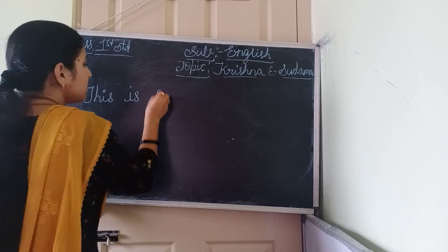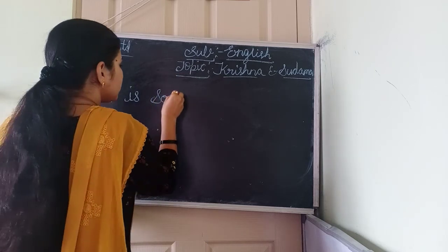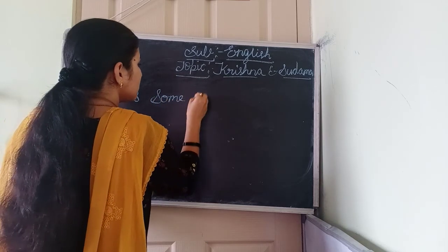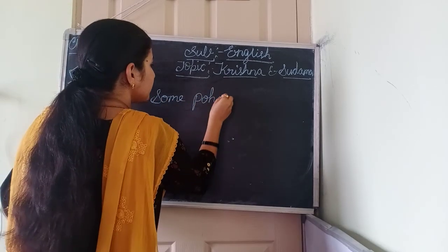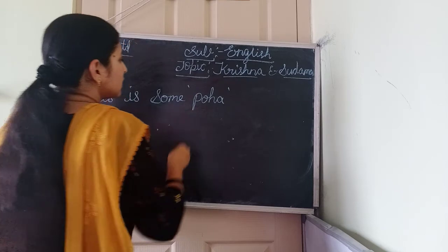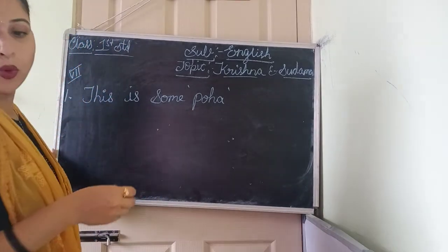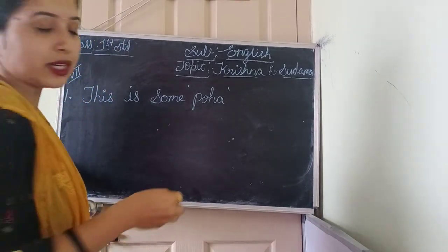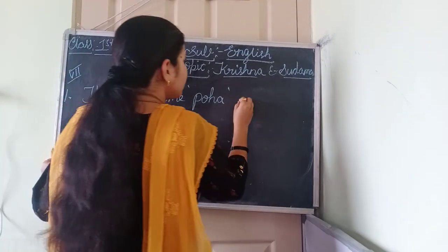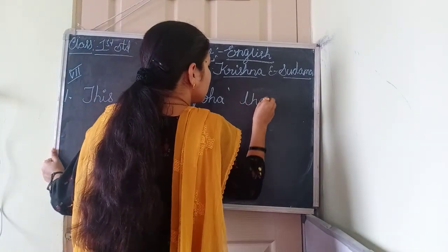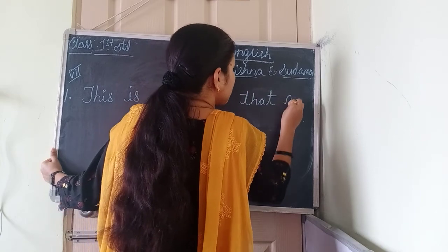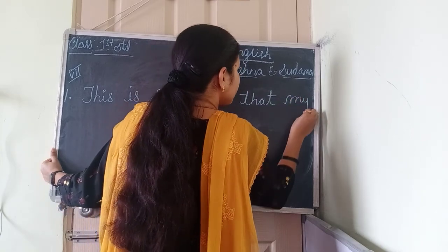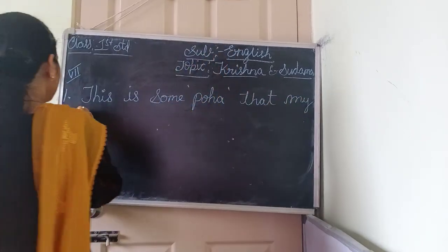Writing the sentence: 'some' — S-O-M-E — 'some poha, that my wife made for you.'